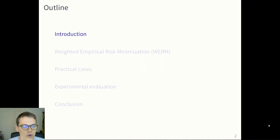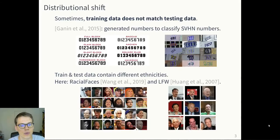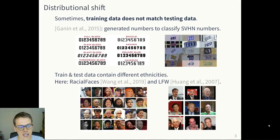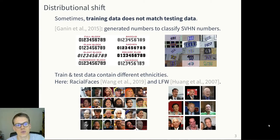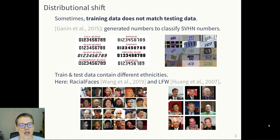I'm going to talk first about some motivating examples. Sometimes training data doesn't match testing data — the distributions are different. We call that problem distributional shift.